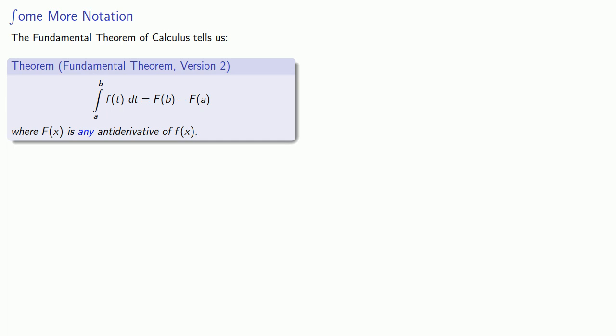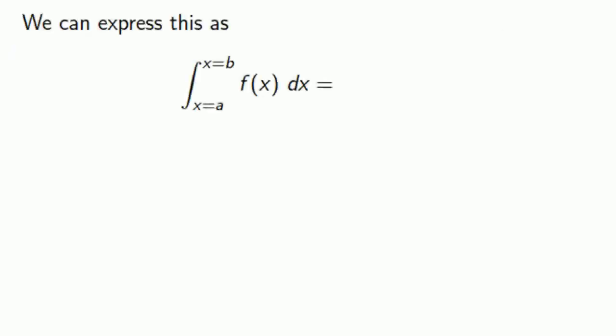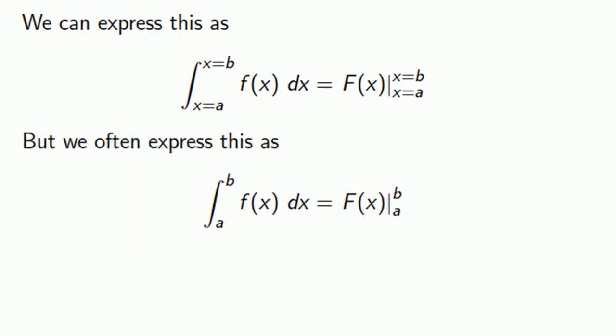A bit of notation. We can express this as the definite integral from x equals a to x equals b, f of x dx, and the evaluation, this f of b minus f of a, we can express as f of x bar x equals a to x equals b. Well this is how we can express it. We often drop out the x equals and so we see this form.